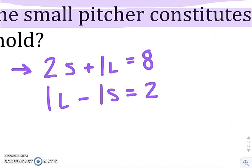So if we subtract two S over to the other side, this becomes one L equals eight minus two S.